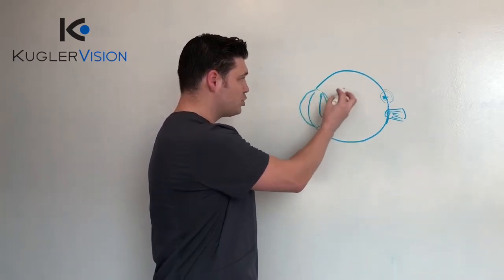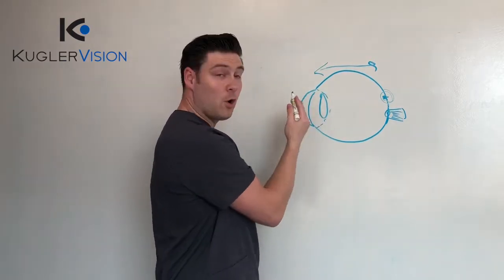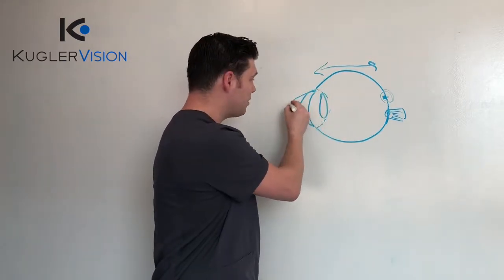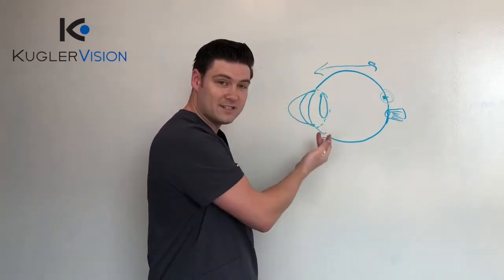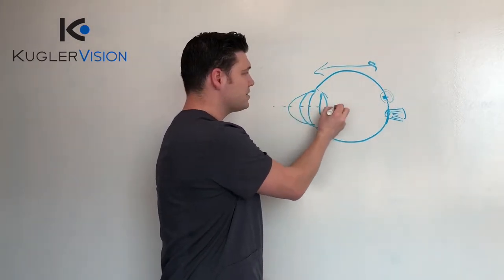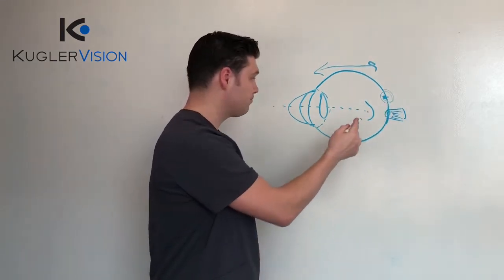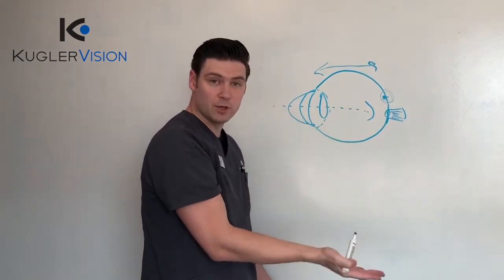When the eye is too long or the cornea is too steep, which lengthens the eye, it causes the light to get focused at a point before the macula in your retina. When that happens, things are blurry at a distance.